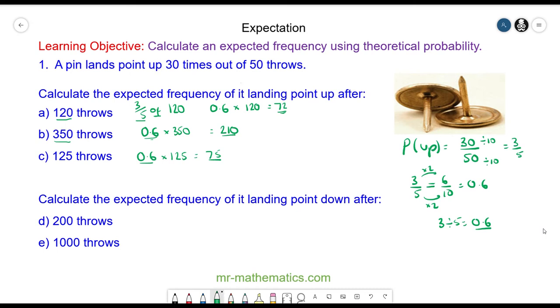Calculate the expected frequency of it landing point down now, so this is different to point up, after 200 throws. Well if it landed point up 30 times, the probability of it landing point down would be the 20 times it landed point down over the sample which is 50. This simplifies to two fifths, and as a decimal this is 0.4.